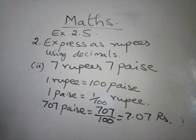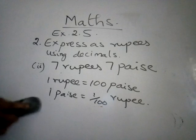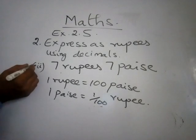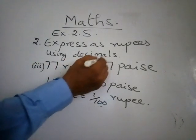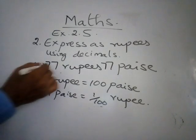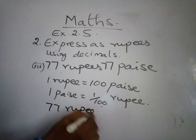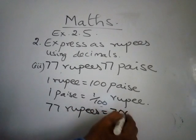Third question: just they have added 77 rupees and 77 paise. So 77 rupees, as we know already, 77 rupees will be equal to 7,700 paise.